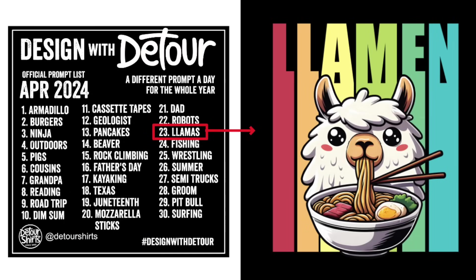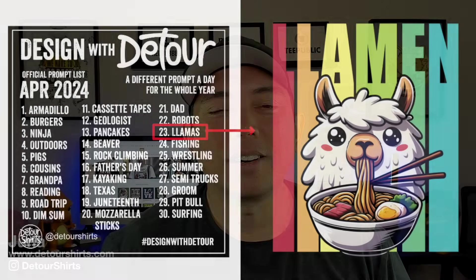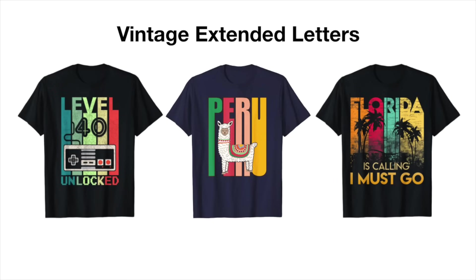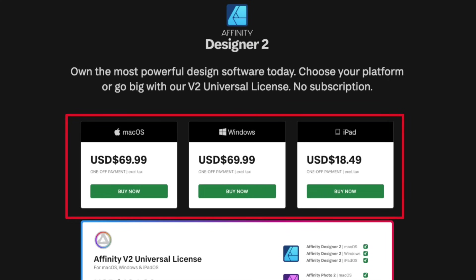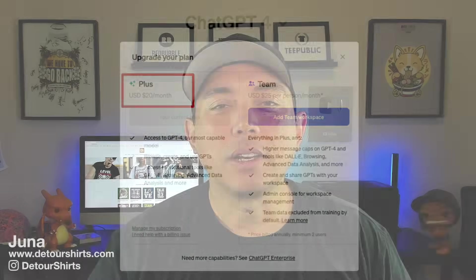Hey everyone, it's Juna with Detour Shirts. In this video, I'm going to share with you how I create a design like this one that I did for my llama prompt for Design with Detour. This style, I like to call it vintage extended letters. I'm going to show you how to do it for free using Canva free and some AI tools that are also free.